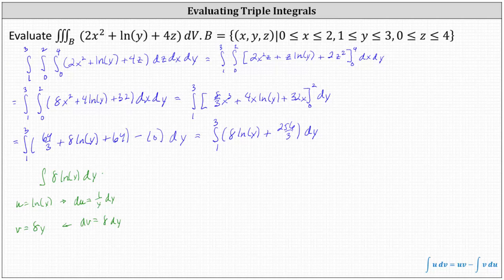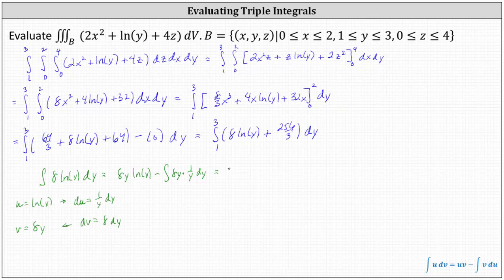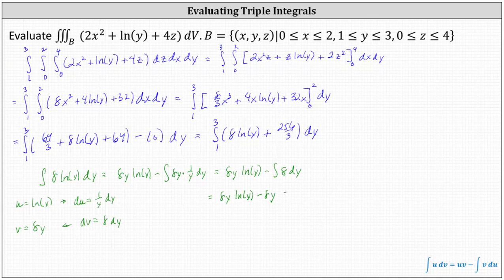Applying the integration by parts formula, we have u times v, which is eight y natural log y, minus the integral of v times du, which is eight y times one over y dy. Simplifying, we have eight y natural log y, minus the integral of just eight dy. So the anti-derivative is eight y natural log y minus eight y plus C.